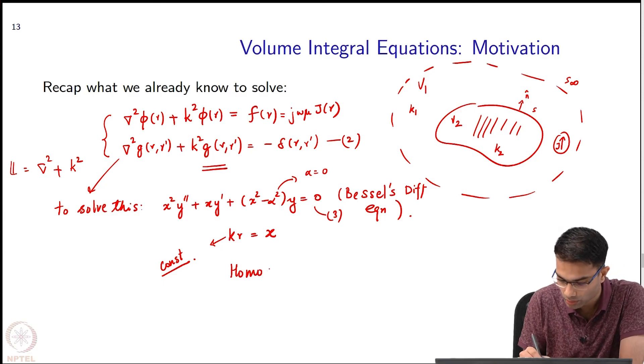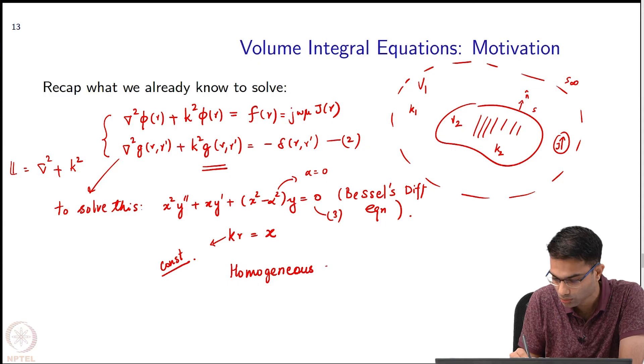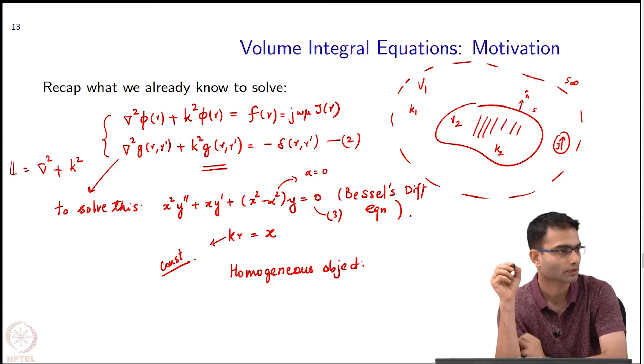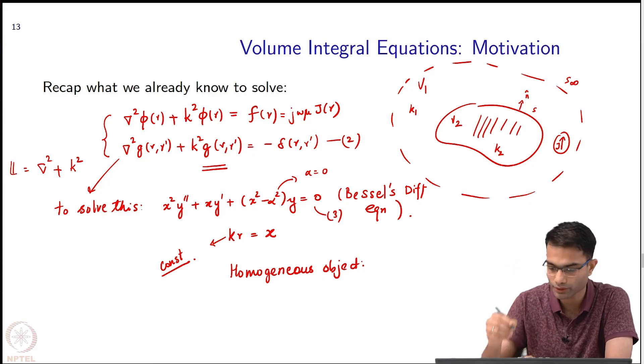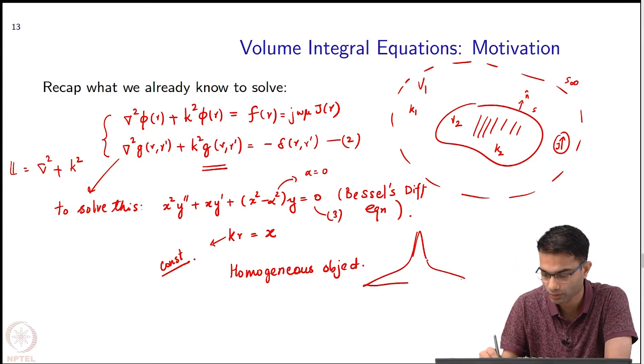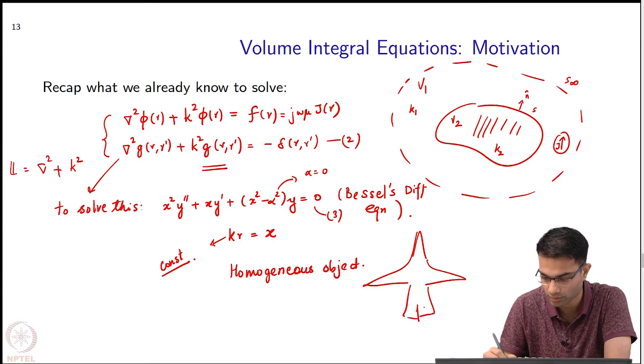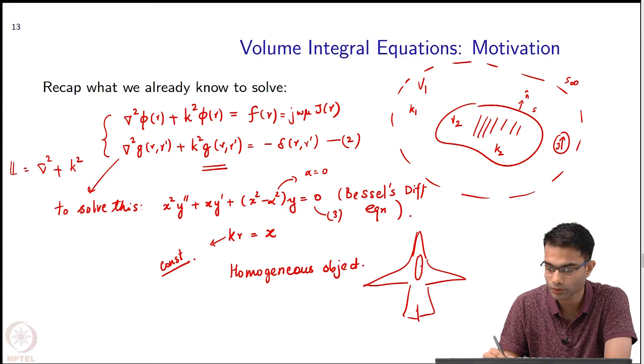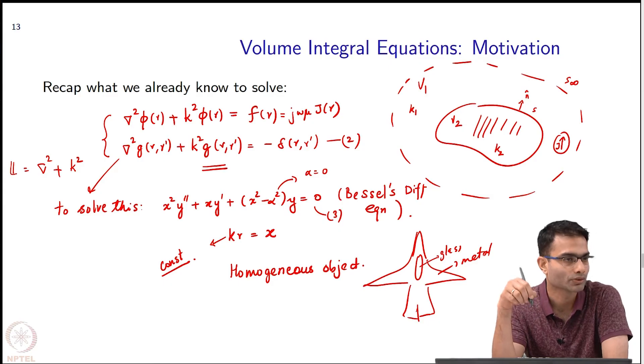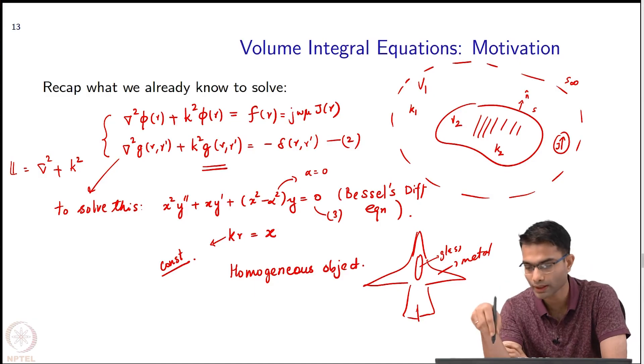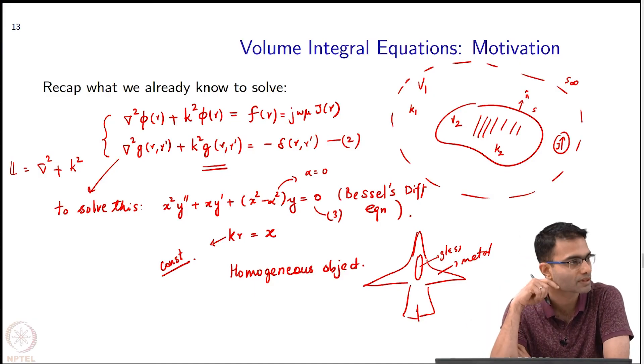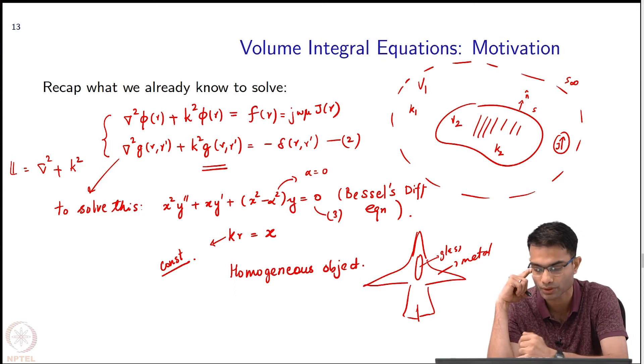Now real life objects, will they always be homogeneous? Obviously not. Think that you are calculating the RCS of some aircraft over here. There is some cockpit over here. You will have some glass over here, some metal over here, different components are there. Realistic objects are going to be heterogeneous.